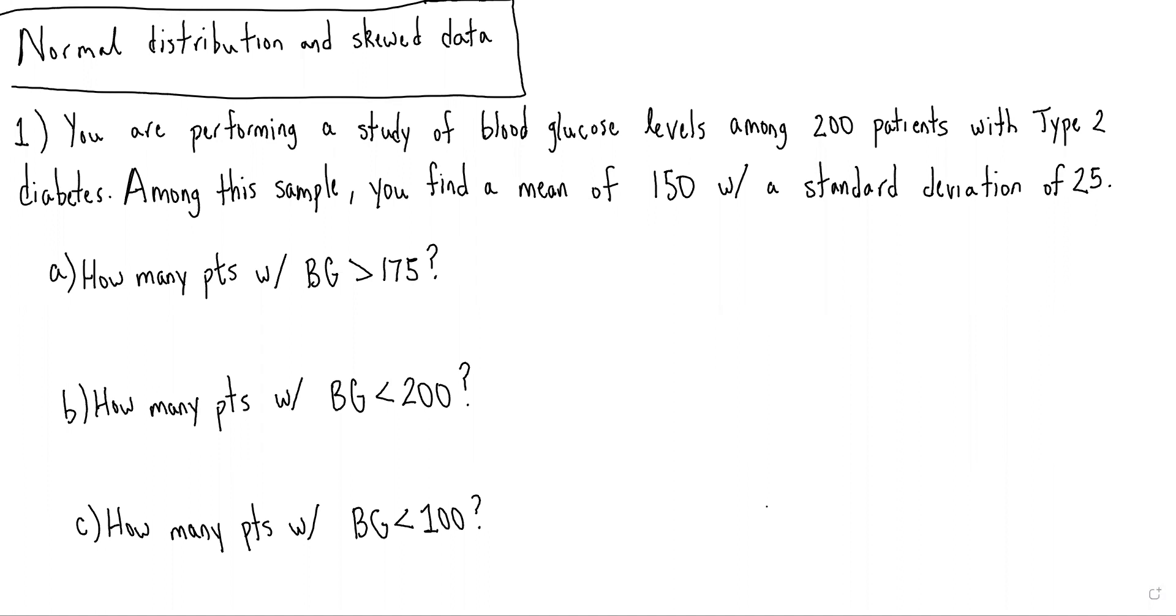So in this case, we're performing a study of blood glucose levels among 200 patients with Type 2 diabetes. Among this sample, we find a mean of 150 with a standard deviation of 25, and we're asked three questions, basically saying how many patients fall above or below some sort of cutoff.